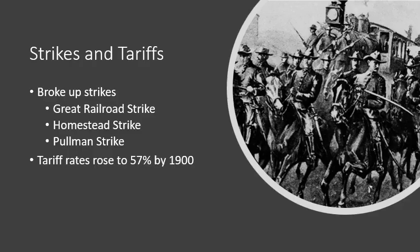The government was also willing to side with companies over the rights of workers, breaking up strikes. When workers went on strike for better wages and conditions, the government sent in troops to break those strikes. The first was the Great Railroad Strike of 1877, when the Baltimore and Ohio Railroad cut wages for the third time in a year. Workers went on strike and basically shut down the railroad for 45 days until local and state militias, with federal troops, came in and broke them up.